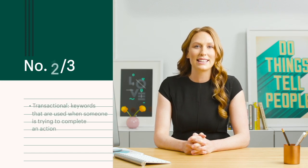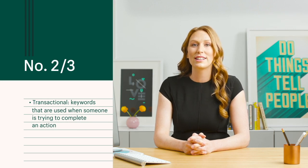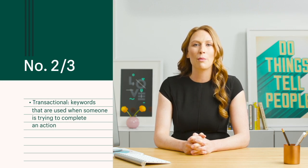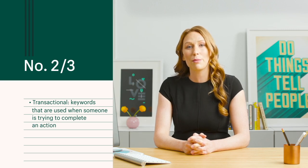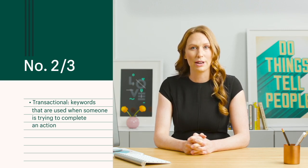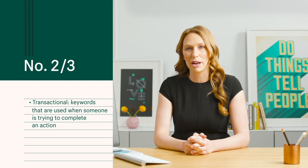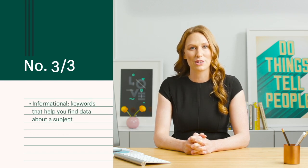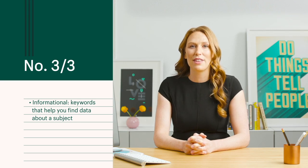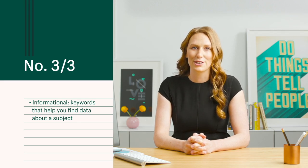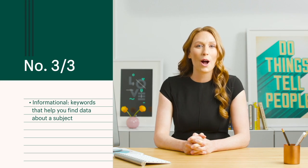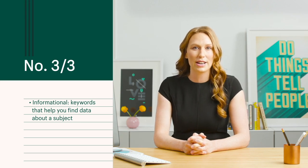The second type is transactional. Transactional keywords are used when someone is trying to complete an action. For example, someone who searches the keyword 'buy running shoes online' is trying to make a purchase. And the third keyword type is informational — an example of this would be 'what is the most popular style of running shoes?' For your e-commerce business, you'll want to target transactional and informational keywords.